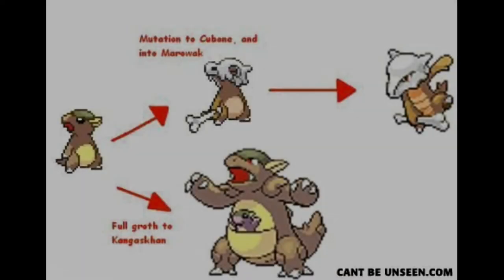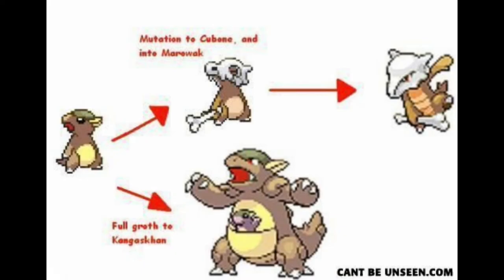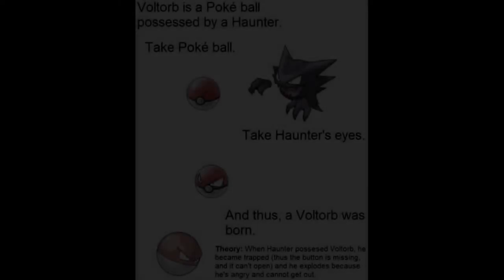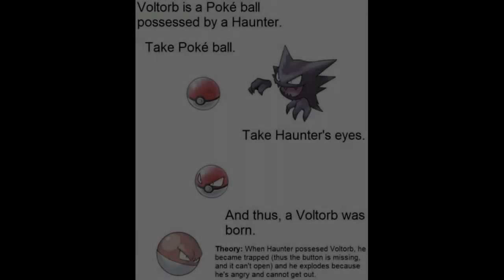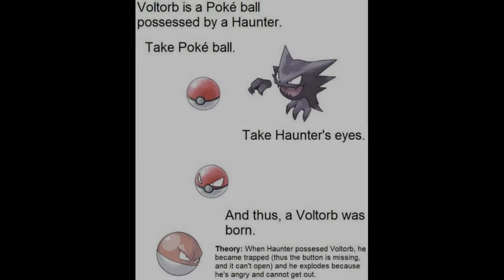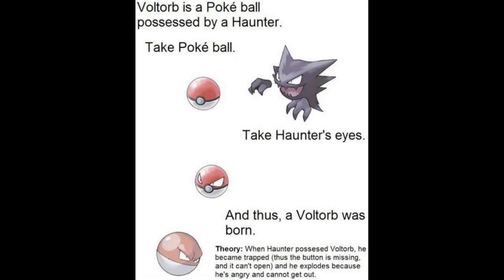Cubone is a baby Kangaskhan. Despite Kangaskhan babies already existing, Cubone does resemble Kangaskhan — the subtle changes in its hair and the shape of Cubone's skull make this possible. Voltorb is a Pokéball possessed by a Haunter; it's an electric type that looks like a Pokéball, and it is possible to be possessed by Ghost Pokémon.